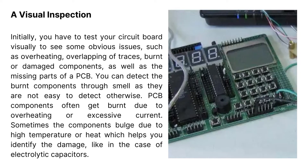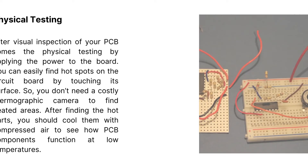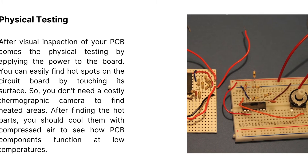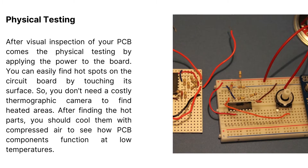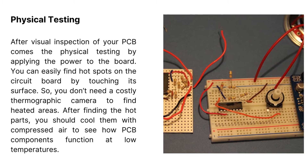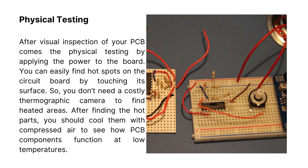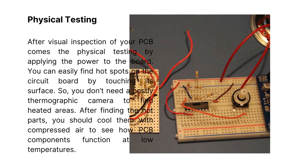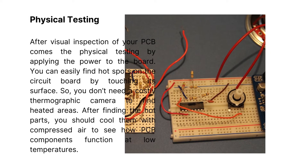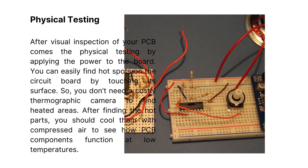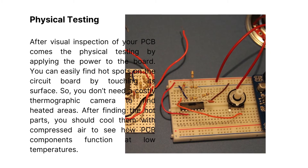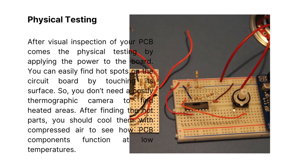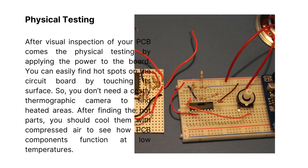Physical testing: after visual inspection of your PCB comes the physical testing by applying power to the board. You can easily find hot spots on the circuit board by touching its surface, so you don't need a costly thermographic camera to find heated areas. After finding the hot parts, you should cool them with compressed air to see how PCB components function at low temperatures.